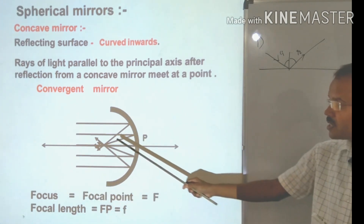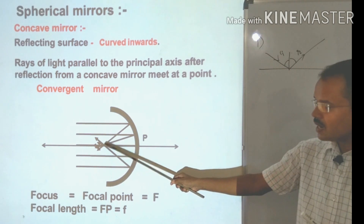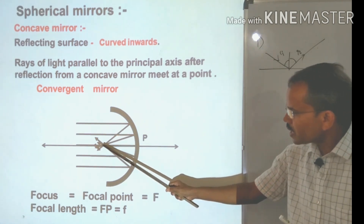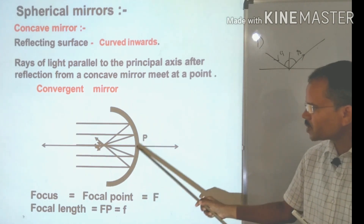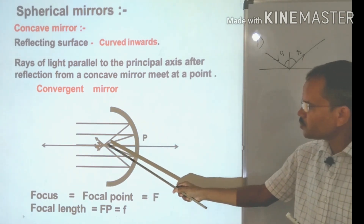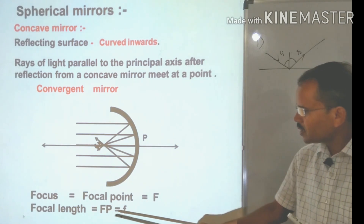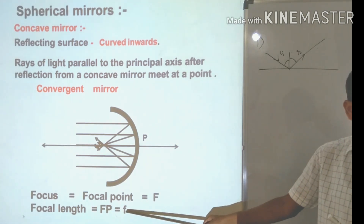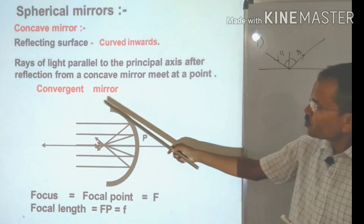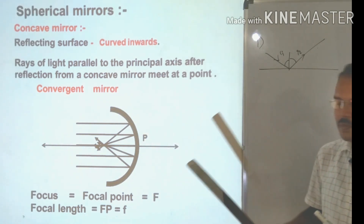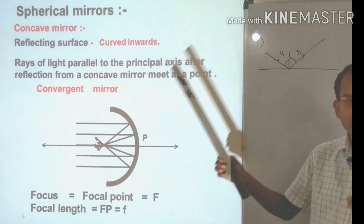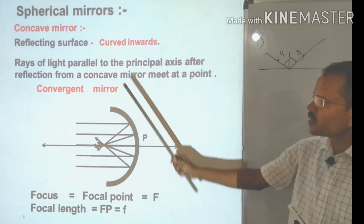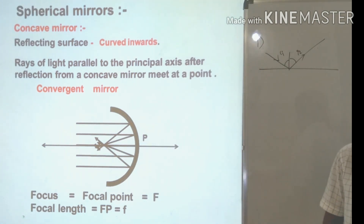The point where all reflected rays converge is called the focus or focal point, represented by F. The distance between F and the center of the reflecting surface P is called the focal length, represented by small f. Because the reflected rays converge, a concave mirror is also called a convergent mirror.